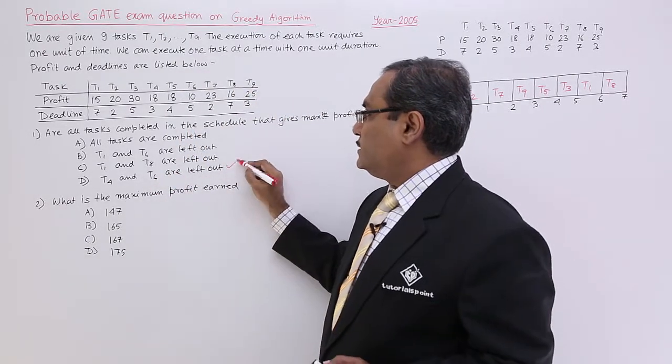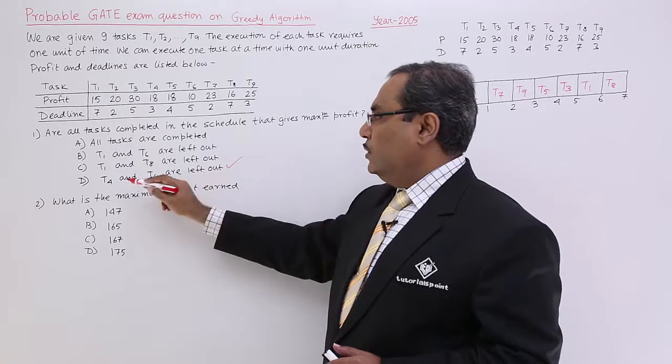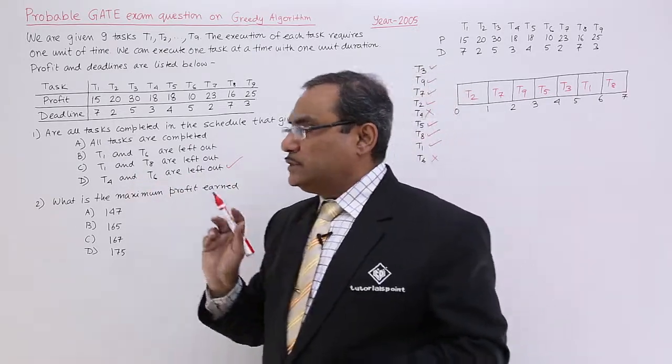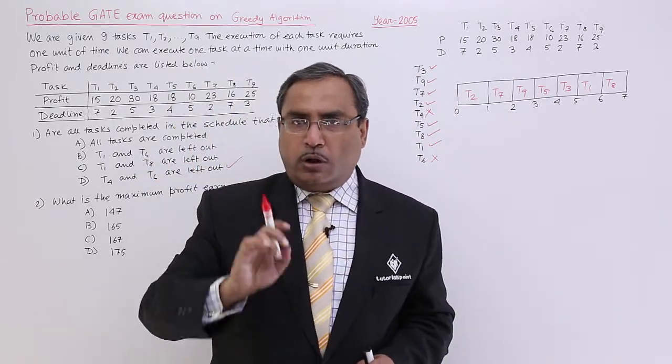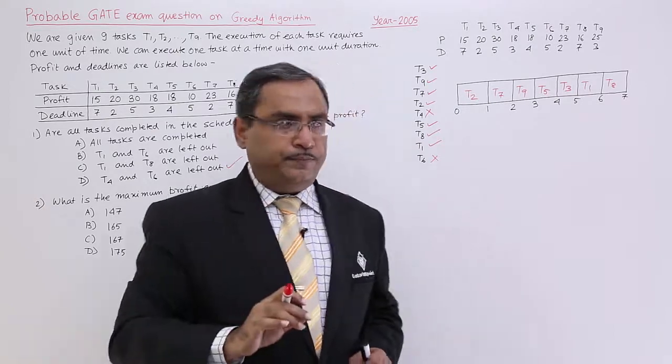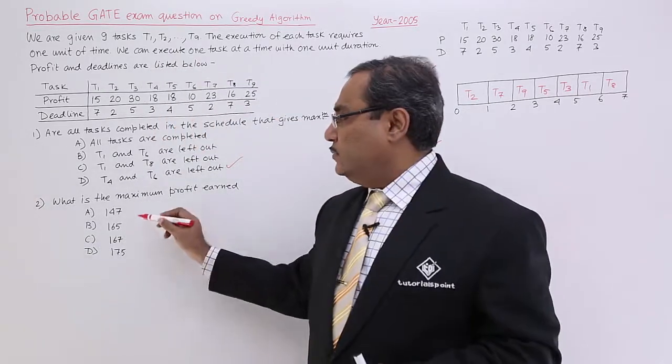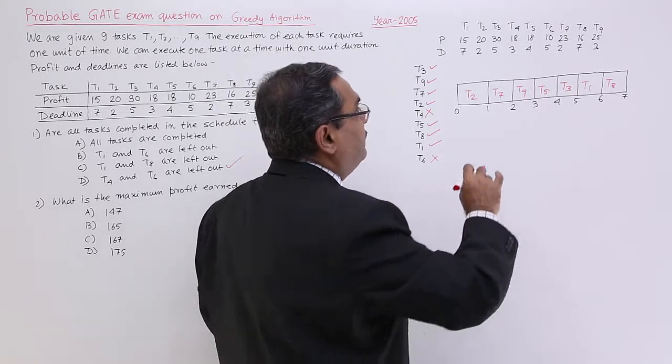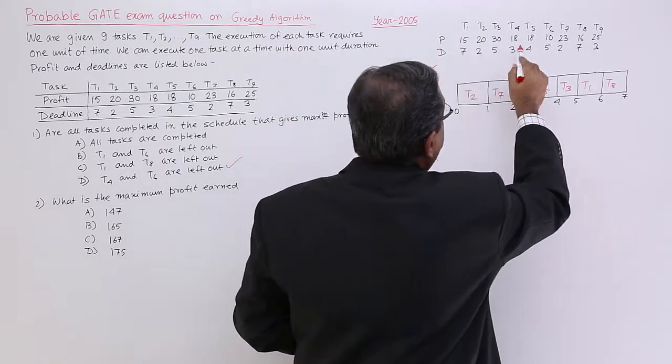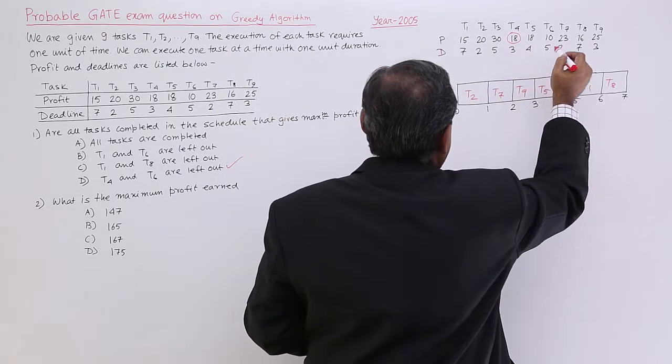You are not getting any option here like this? Yes, I am getting the option here: T4 and T6 are left out. I shall put a tick on this option D. Now the next question is what is the maximum profit earned?